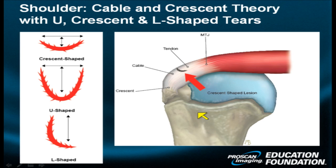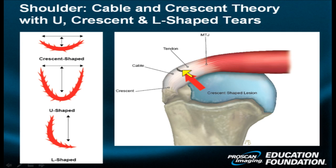Here is an example of a patient who has a tear visible from the top down. The tear has a curvilinear configuration but is not yet retracted. In a cable-dominant scenario, the retraction will be more dramatic and will have the shape of a U when viewed from the top down. In a crescent-dominant scenario, the retraction will be less and it will look more crescent-shaped.